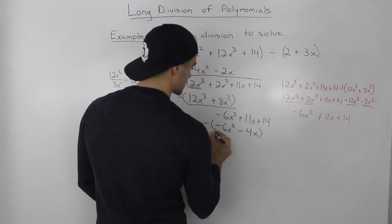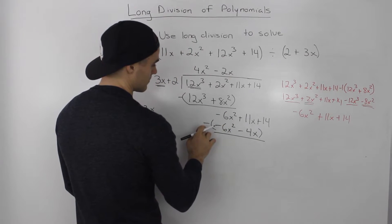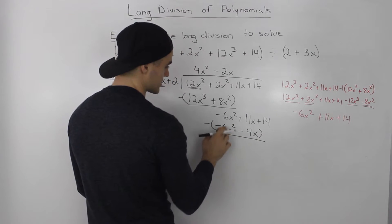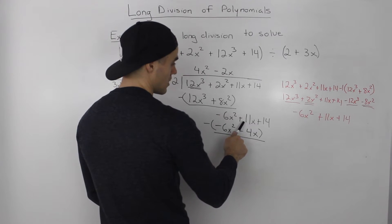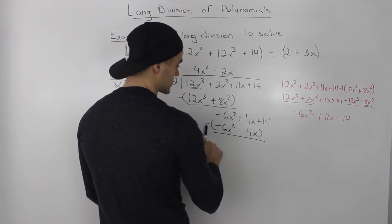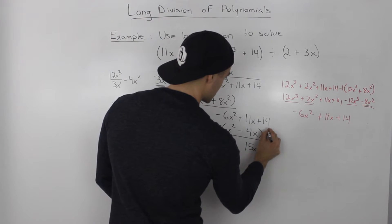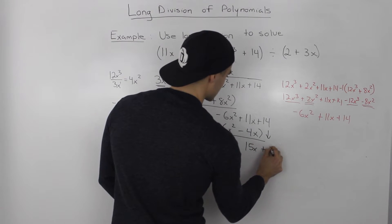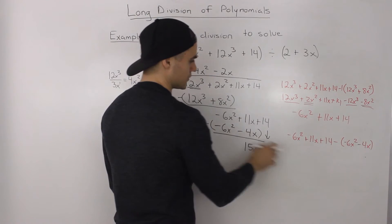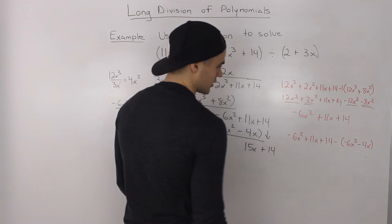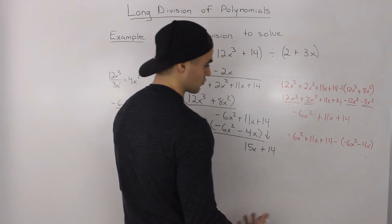When we subtract this whole expression: negative 6x squared minus negative 6x squared is 0. Then 11x minus negative 4x is 15x. We bring the 14 down, so that gives us 15x plus 14. Again, doing this subtraction on the side just to make sure that the result of 15x plus 14 is correct.